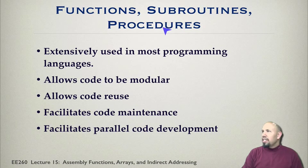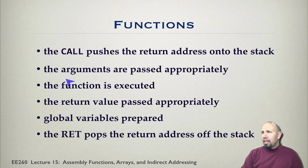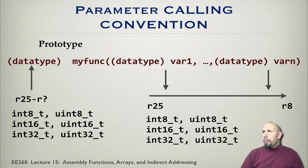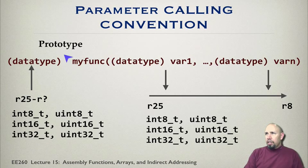With functions we kind of went through this before — let me backtrack a little. You basically have a call that pushes the return address onto the stack, the arguments are appropriately passed, the function is executed, the return value is passed appropriately, global variables may be prepared, and then the return pops the return address off the stack into the program counter. When you define a function it may have parameters and there is a particular calling convention.